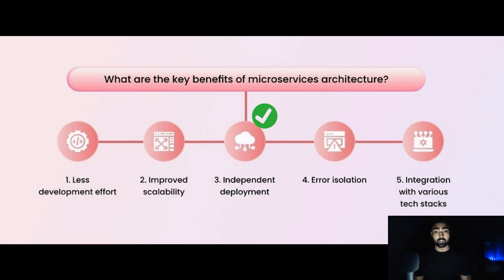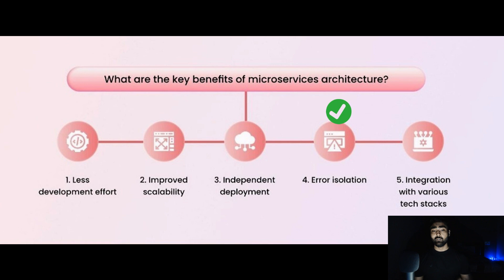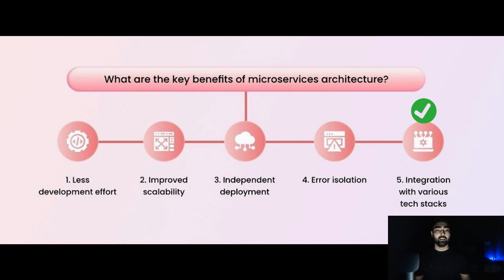Fourth, error isolation — if there's a bug in production in a particular domain, you don't need to jump into other codebases. You isolate, fix, and deploy only that microservice. Fifth, integration with various tech stacks — since all are different microservices, each is free to choose any technology. You can have a PHP team, a Java team, a Node.js team, and a .NET team, all contributing to one product.